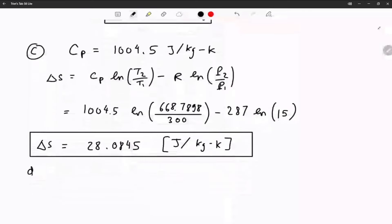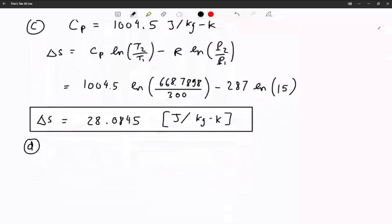For d, we calculate the power required. Power required is m dot times cp times T2 minus T1, which gives you: m dot is 25, cp is 1004.5, then T2 minus T1 is 668.7898 minus 300, and we get a power value.